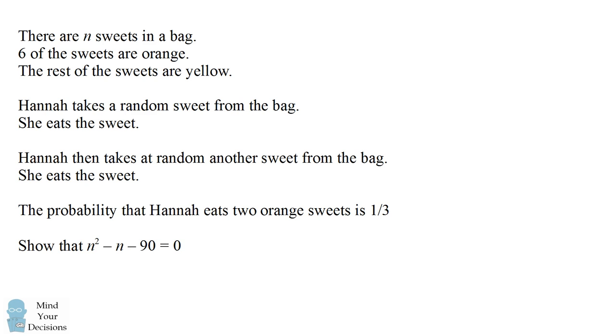This math problem went viral after it was asked to British high school students on a compulsory exam. There are N sweets in a bag. Six of the sweets are orange, the rest of the sweets are yellow. Hannah takes a random sweet from the bag, she eats the sweet. Hannah then takes at random another sweet from the bag, she eats the sweet. The probability that Hannah eats two orange sweets is one third. Show that N squared minus N minus 90 equals zero.